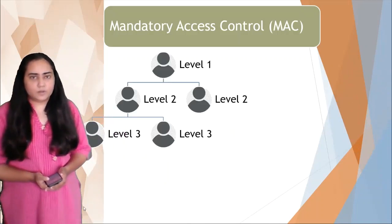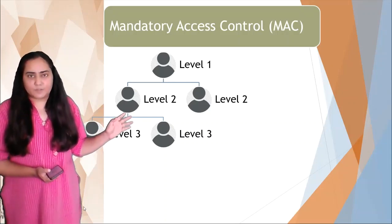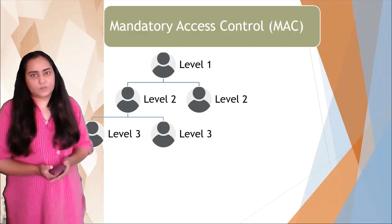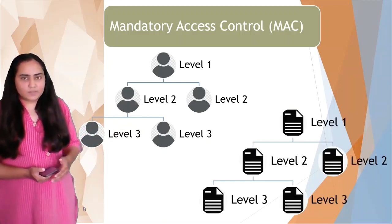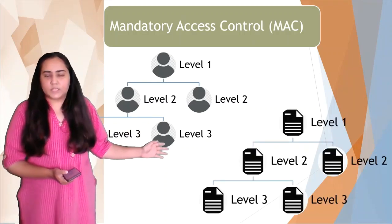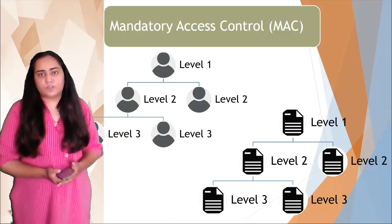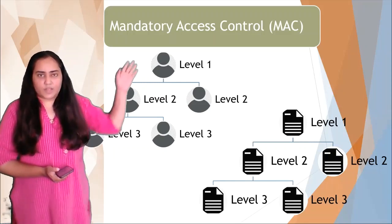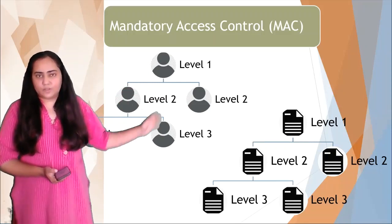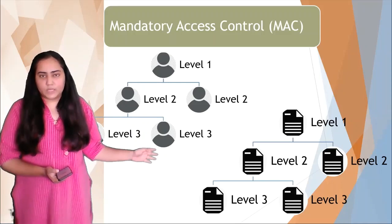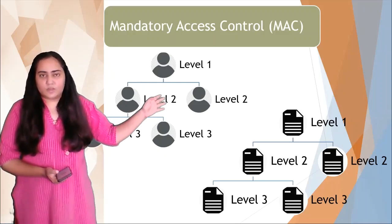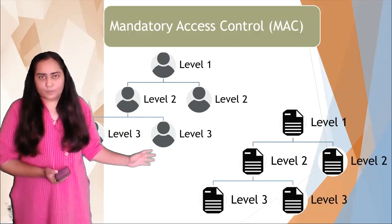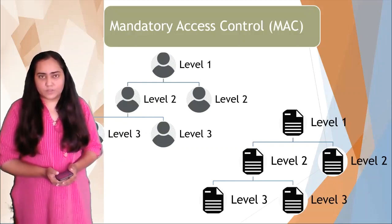Users are divided into levels — level one, level two, level three — and just like that, files are also divided into levels. If the user is at level one, they can access all files from level one to three. If the user is on level two, they can access every file on level two and below. This is how mandatory access control works.